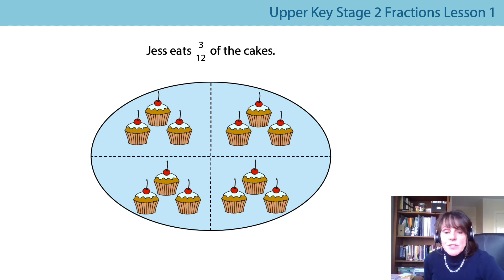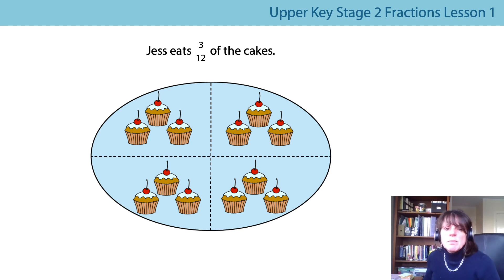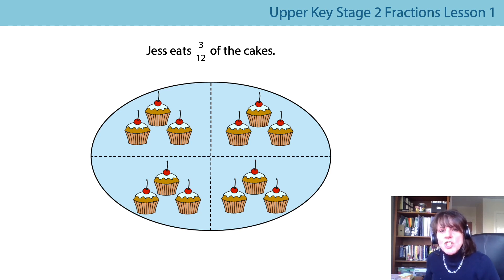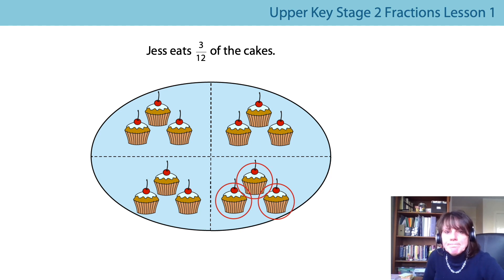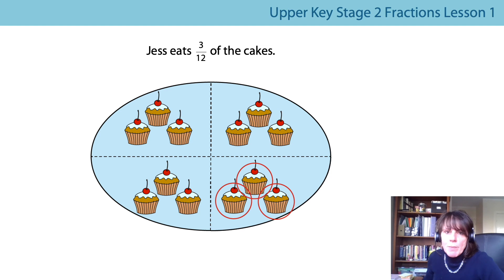Jess eats three twelfths of the cakes. Does she eat more? Does she eat fewer? Does she eat the same? The whole has been divided this time into 12 equal parts. I'm going to count the cakes by skip counting in threes: three, six, nine, twelve. So there are 12 cakes. If I divide the whole into 12 equal parts, that's going to be one cake in each part. And then Jess eats three of them, so I need to circle three of the cakes. Twelve equal parts, 12 cakes, and three — that's the three that's been circled. We're getting our heads around what the numerator and the denominator are explaining.